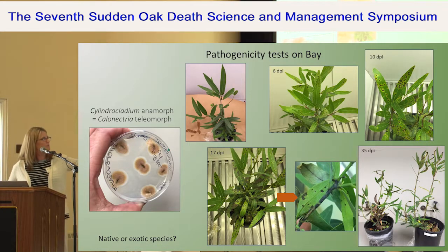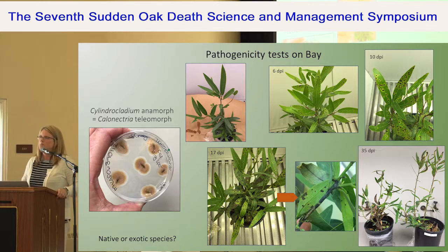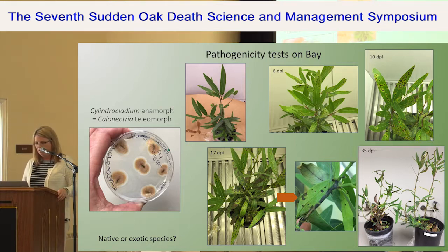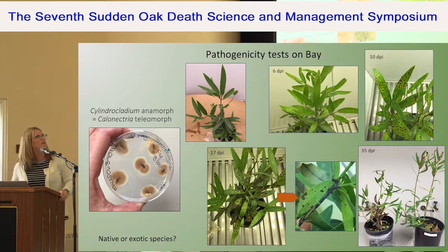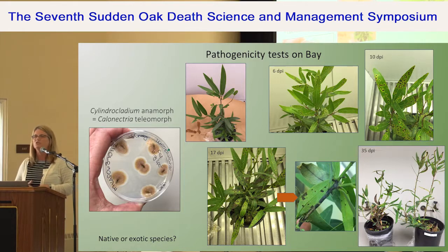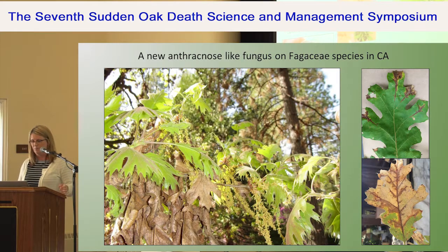This Calonectria — the same genus that causes boxwood blight — has a Cylindrocladiella anamorph. We conducted pathogenicity tests on bay: after six days we could see foliar spotting that progresses, and by about 35 days in high humidity and optimal temperatures, you get complete defoliation. It's a really effective pathogen of bay. It seems to be a disease that really picks up during heavy rainfall winters.